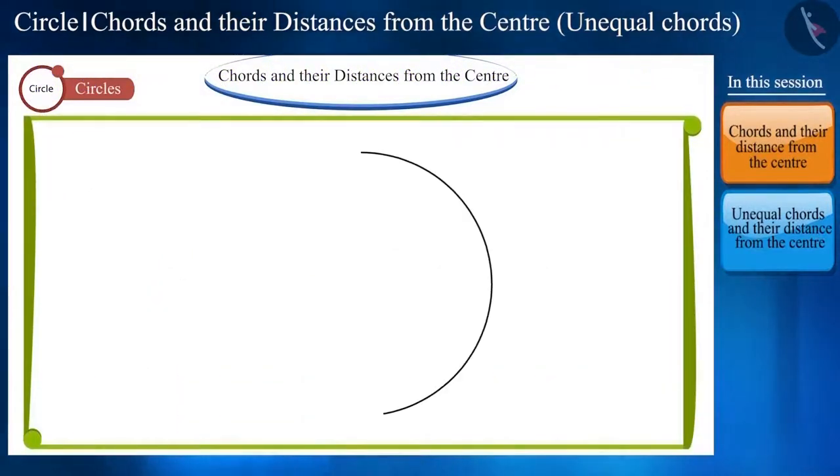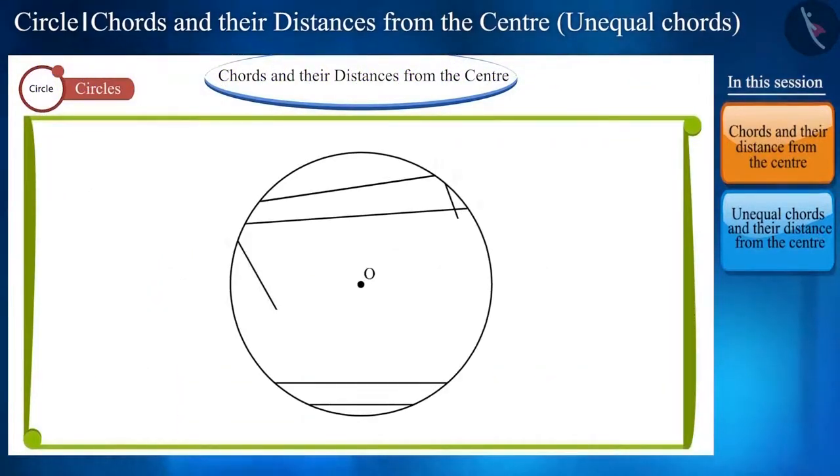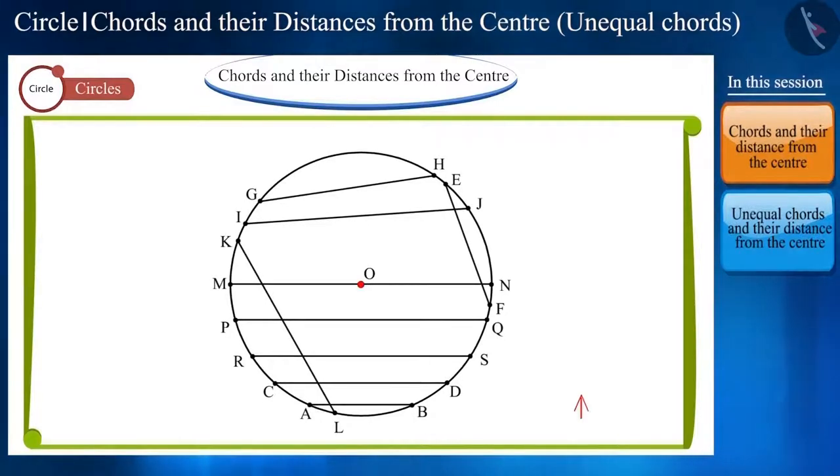Friends, a circle can have infinite chords. When we are moving closer to the center, then the length of the chord increases but its distance from the center decreases. We know that the diameter is the longest chord of the circle which passes through the center. This means center O is located on the diameter so the distance of the diameter from the center is zero.